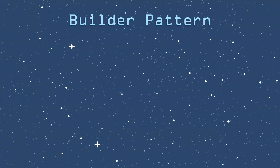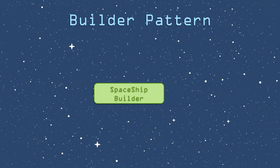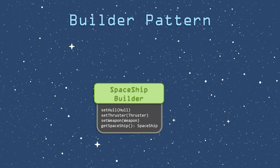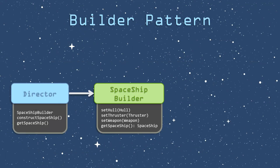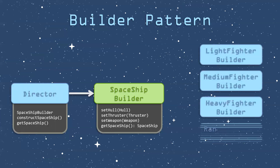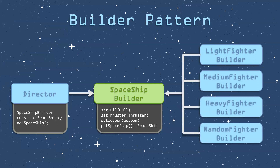With the builder pattern, you have an interface — in this case I called it a spaceship builder. The spaceship builder interface says that anything that implements it must have these methods: set the hull, set the thruster, set the weapon, and return a spaceship. We can invoke this using a director class. The director has a spaceship builder reference and also has the ability to construct spaceships, which makes the spaceship builder run all of its sets — set hull, set thruster, set weapon — and then get spaceship, which makes the spaceship builder return its spaceship object. I created four classes that all implement the spaceship builder interface: light fighter uses all tier one components, medium uses tier two, heavy uses tier three, and random uses a mixture of all three using random numbers.